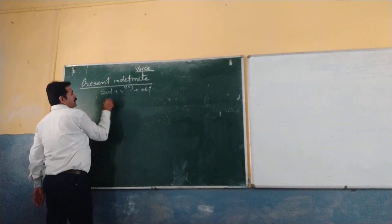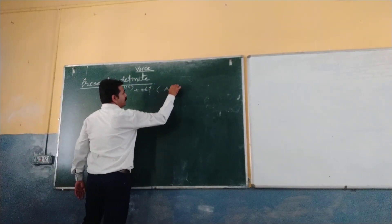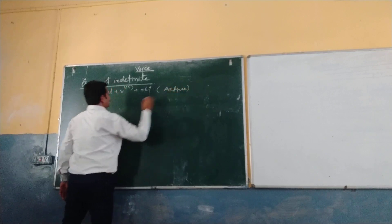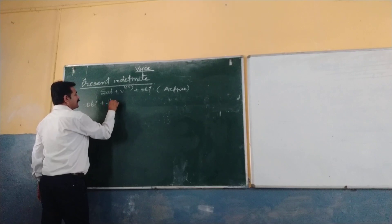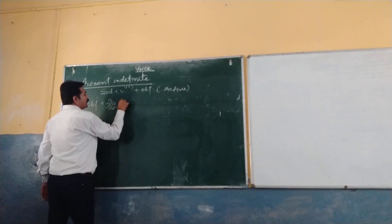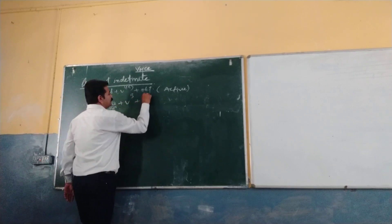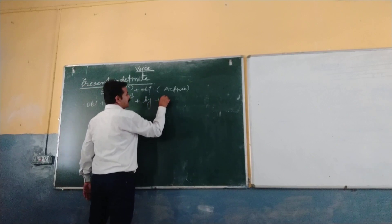For the passive, it is an active. Remember, I am telling active. Now, passive is object plus E, R, M, plus verb 3, plus by plus subject.